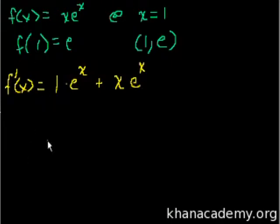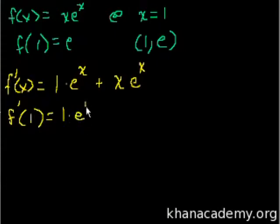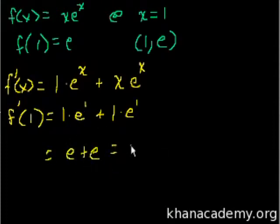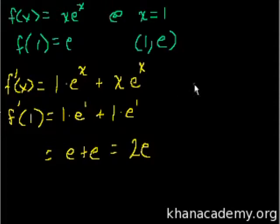So what is the derivative of this function at the point x = 1, or at the point (1, e)? We just evaluate it: f'(1) = 1 times e^1 plus 1 times e^1. Well, that's just e plus e, which equals 2e. We write e because it's easier to write e than 2.7 etc., so we just write 2e. This is the slope of the curve when x = 1.